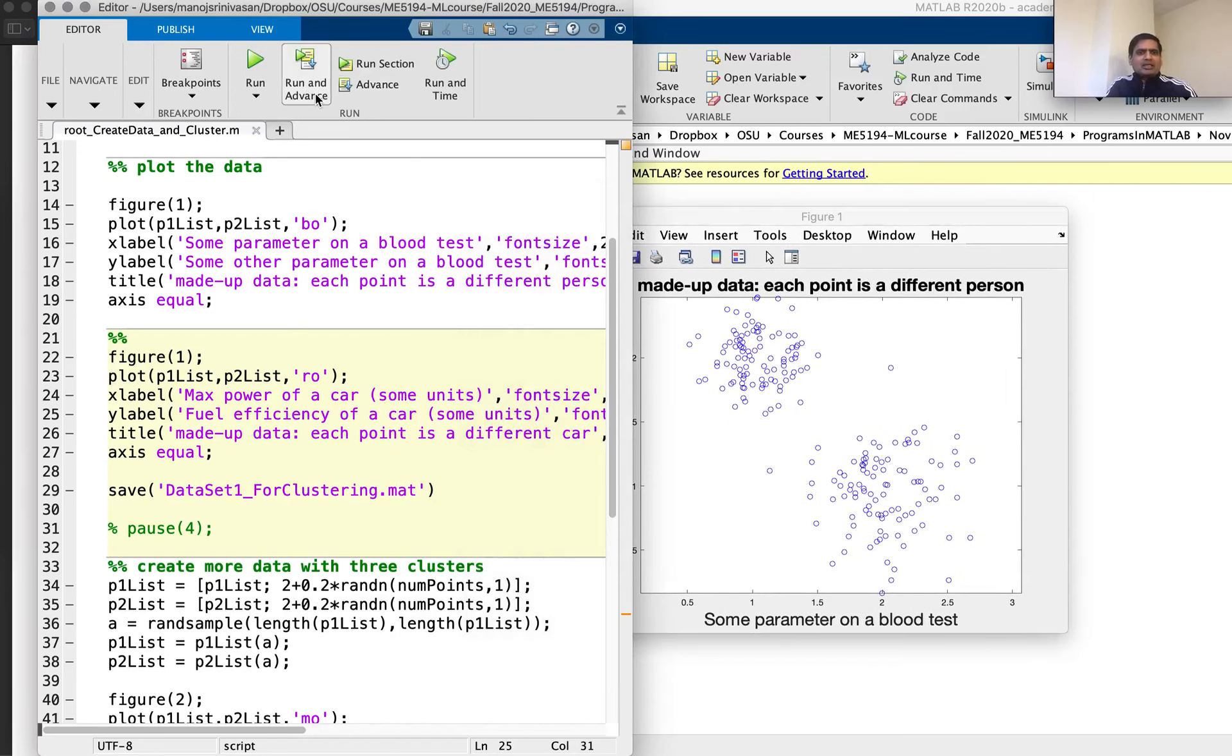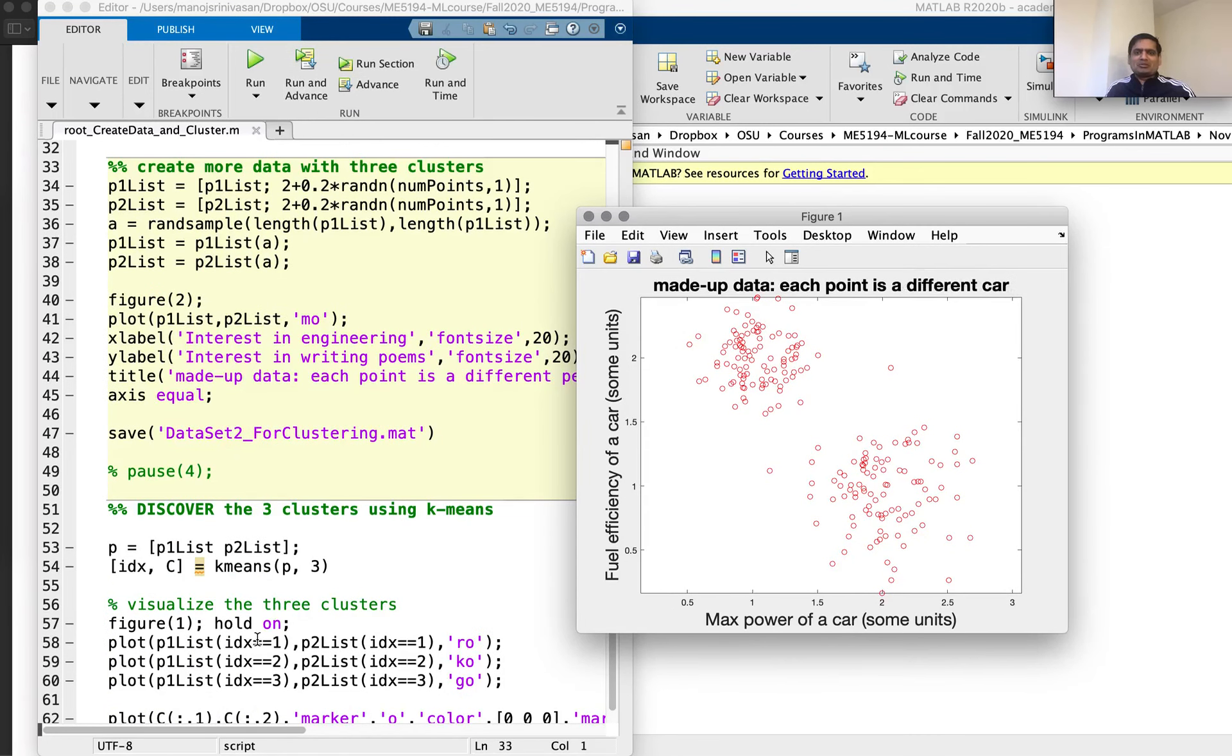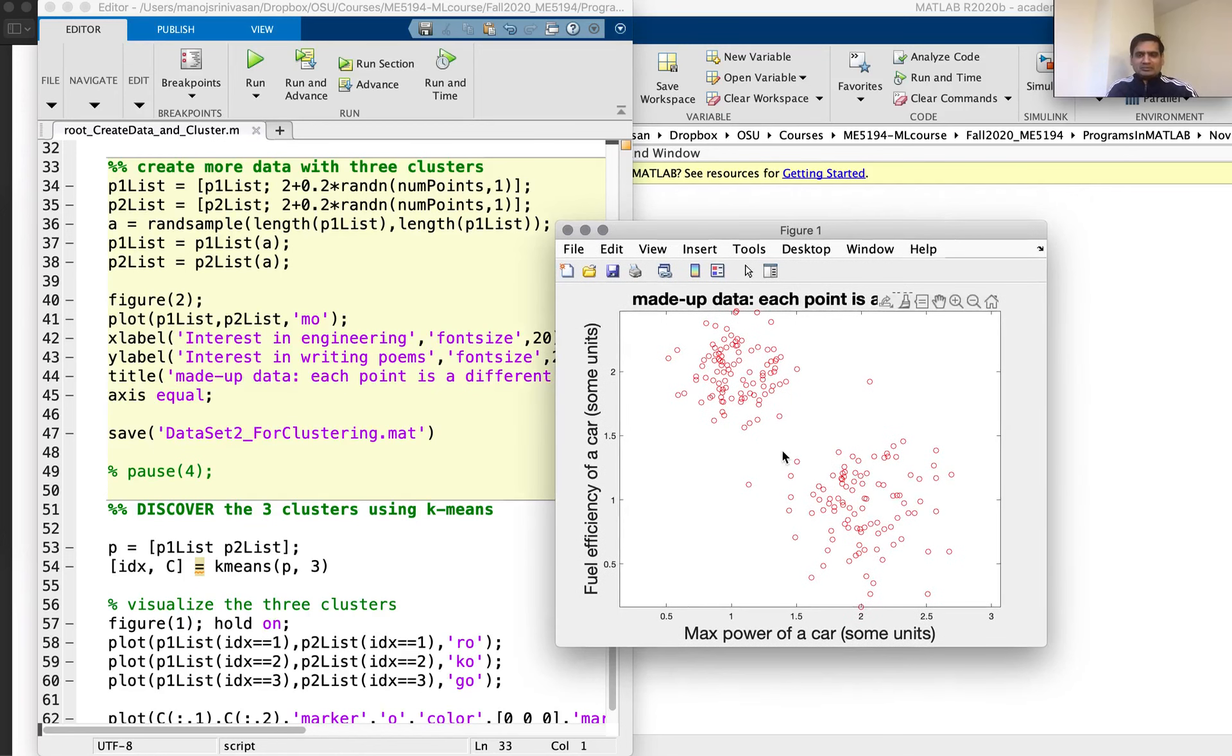Another example with the exact same data, just change the axis here. Imagine you're plotting two variables, attributes of a car. Let's say on the x-axis is maximum power of a car acceleration, max acceleration of a car in some units. And on the y-axis, we have fuel efficiency of a car. It's possible that cars that have a lot of acceleration have lower fuel efficiency. And perhaps there is not a whole range of cars between these two extremes.